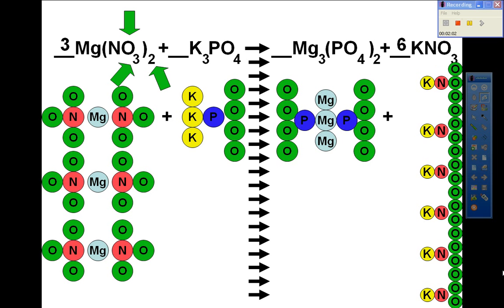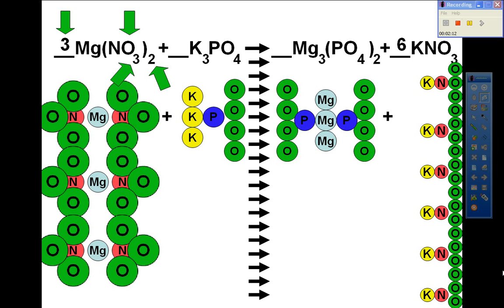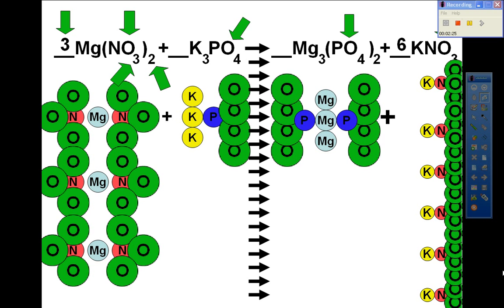Next, we move to oxygen, which has two subscripts and a coefficient. This gives us 18 here, but we can't forget the other four that we have on the same side of the equation, which gives us 22. When we look on the right side, we find that we have 26.